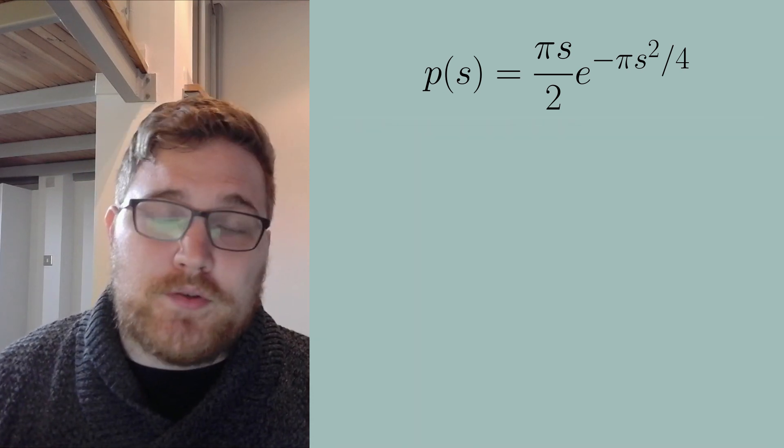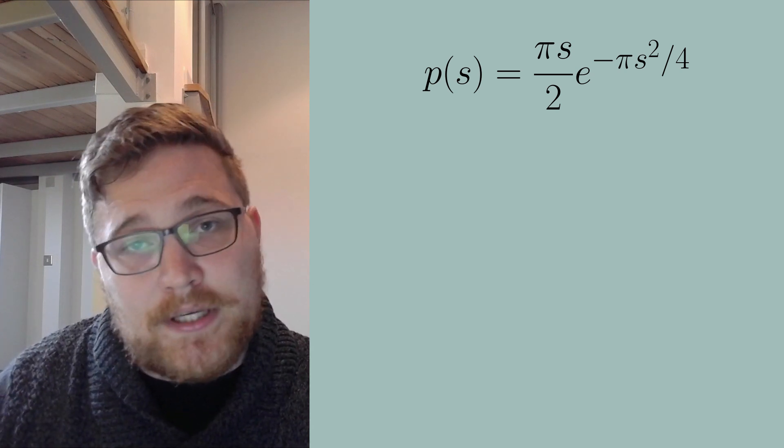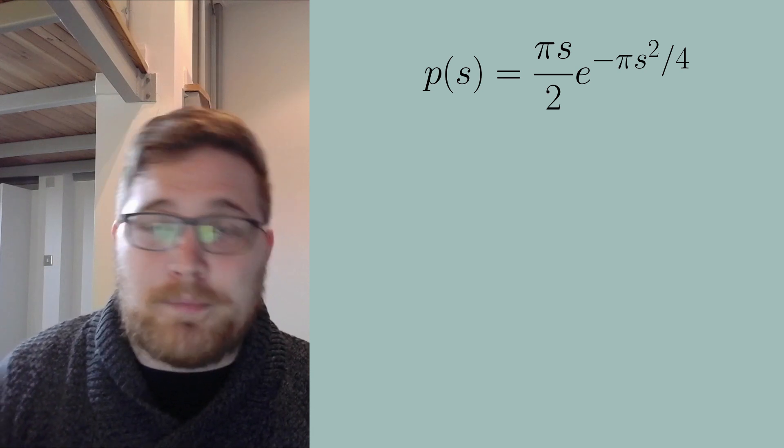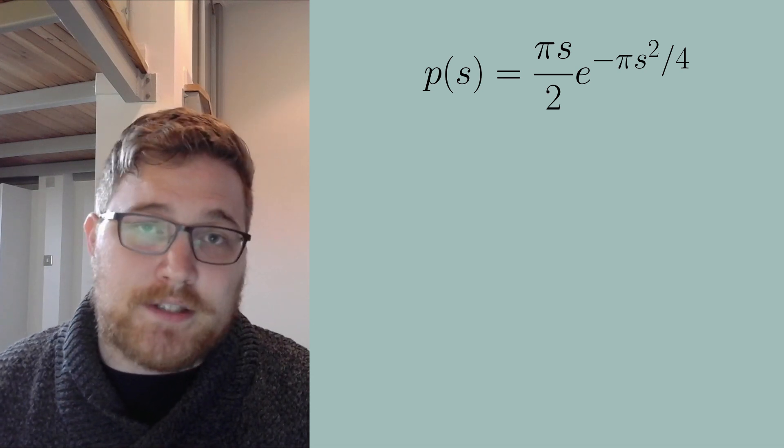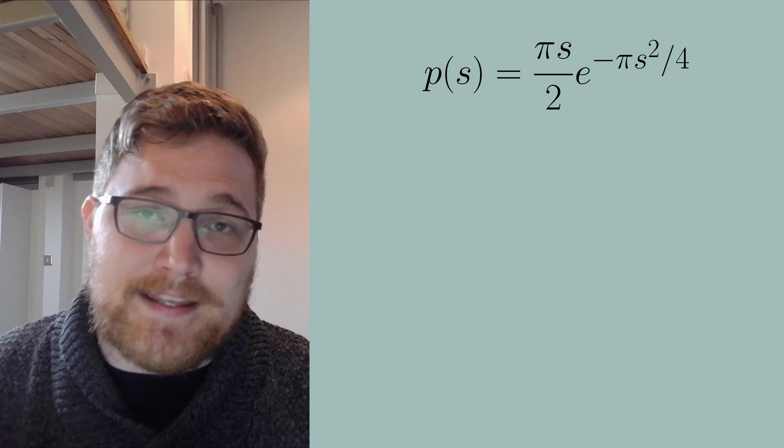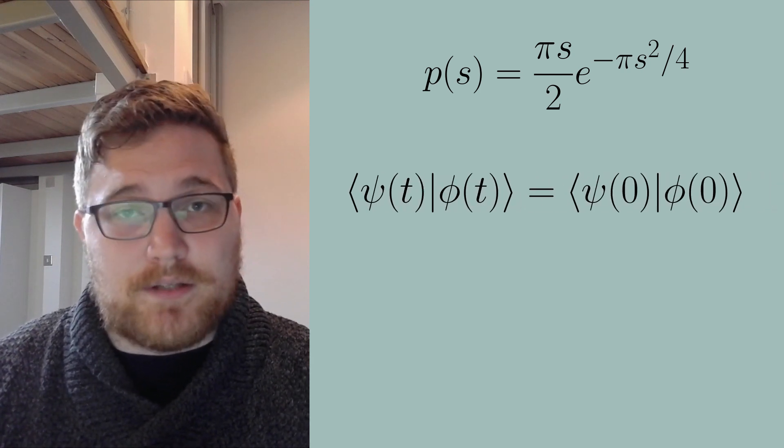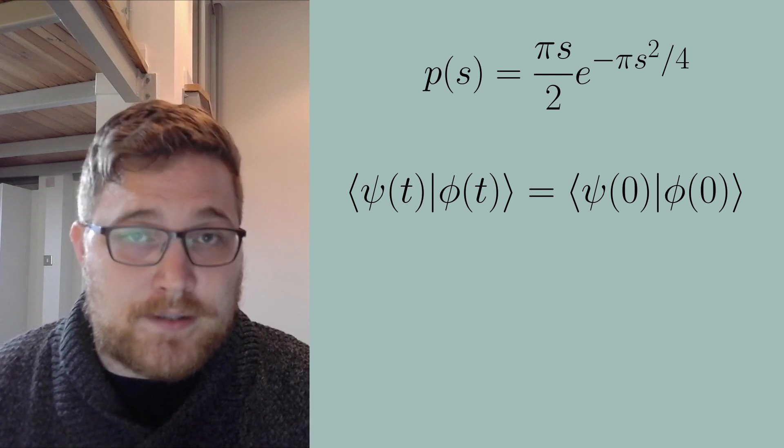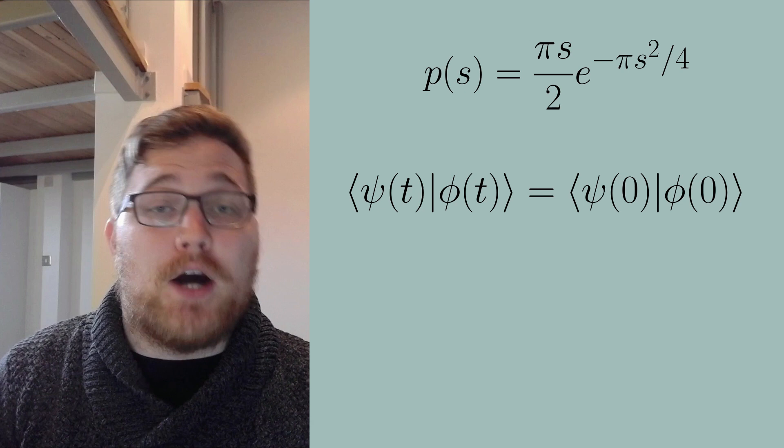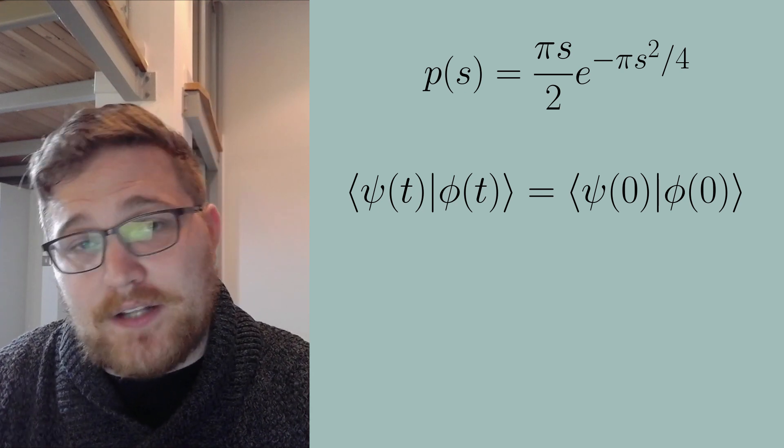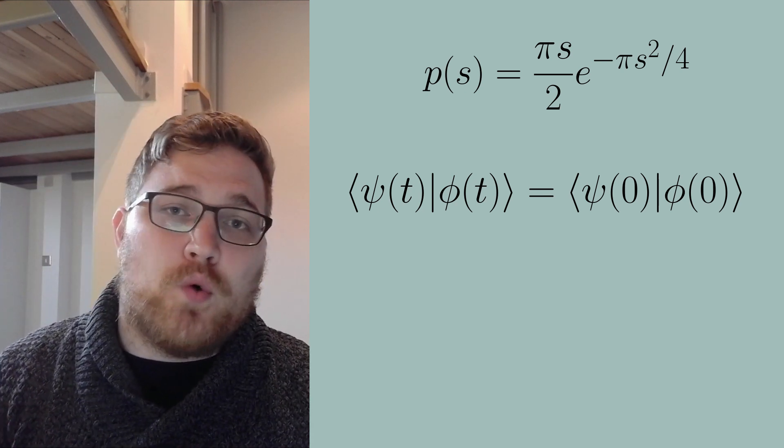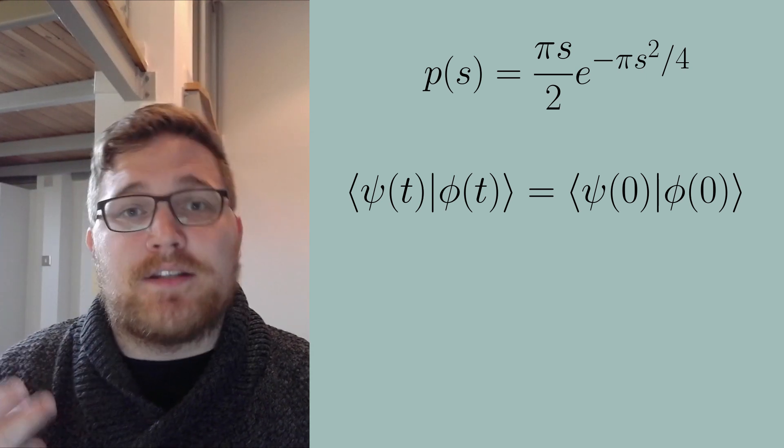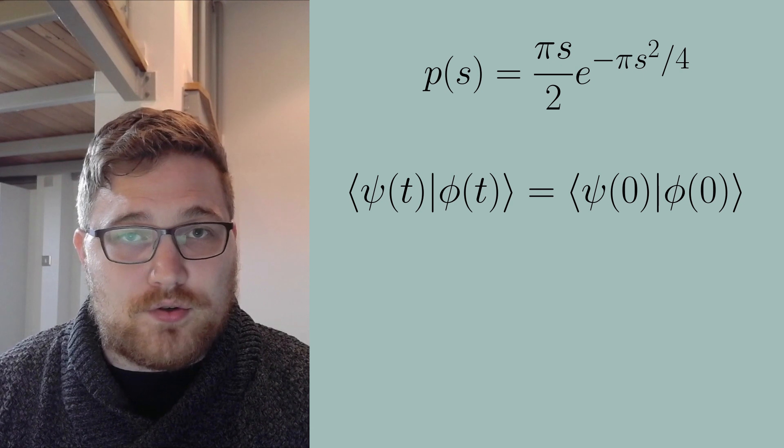So what happens when we try to do something similar but in quantum mechanics? Unfortunately, a similar statement compared to the one that we just said isn't quite possible in this context. The reason for this is that the overlap between two quantum states, which is a way for us to tell how different they are, is constant in time. So by this way of measuring how different two quantum states are, we see that these two quantum states are equally different for all times t. That is, the difference doesn't change between the two states.